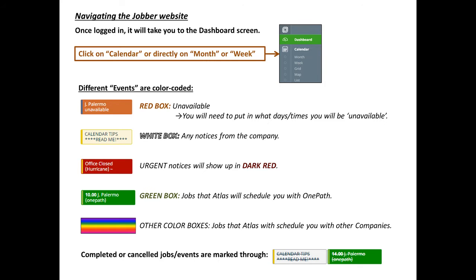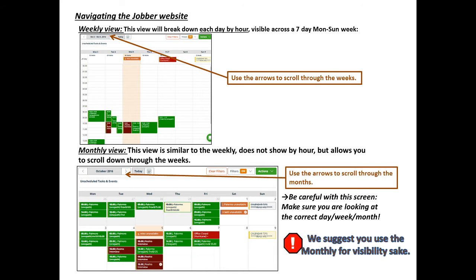Your jobs should have a time slot assigned to them, and you should see a time in that box along with your first initial, last name, and the customer initiating the job. Completed or cancelled jobs will be marked through. You can browse the calendar in weekly or monthly view, but we recommend monthly view for better visibility.